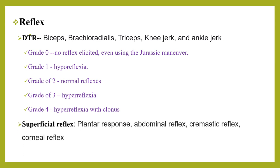Superficial reflexes include the plantar, abdominal, cremasteric, and corneal reflexes. The plantar reflex tests L5–S1–S2: dorsiflexion of the great toe and fanning of other toes when the lateral sole is stroked firmly from heel toward toes. Abdominal reflexes test T9–T12: lightly scratch the four quadrants of the abdomen and observe contraction toward the umbilicus — this reflex may be absent in infants normally. The cremasteric reflex tests L1–L2: a light stroke on the medial thigh causes the testis to retract upward. The corneal reflex tests CN V and VII: touching the cornea with cotton wool causes blinking.